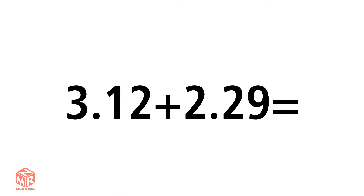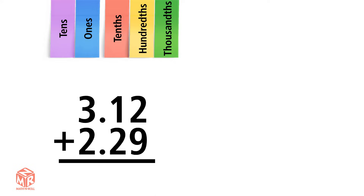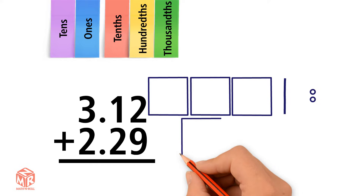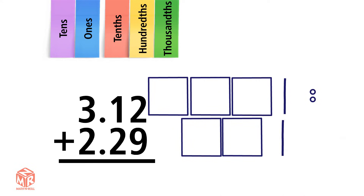Let's try another example: 3.12 plus 2.29. We start by lining up the decimal points. Let's draw it out. This time we also have hundredths, which we're going to draw as circles. So 3.12 has three ones, one tenth, and two hundredths. 2.29 has two ones, two tenths, and nine hundredths.